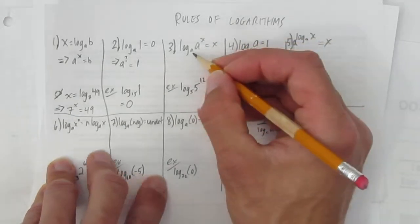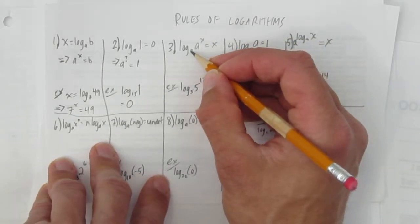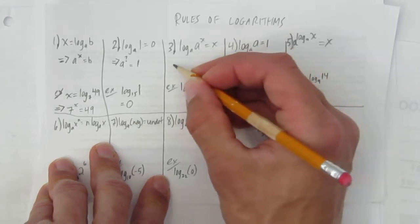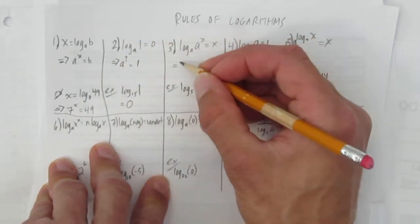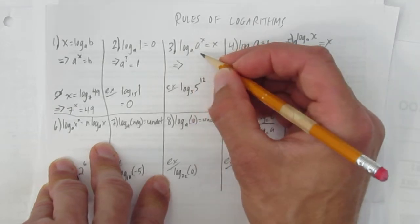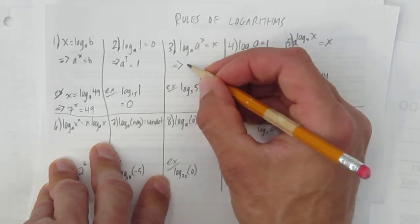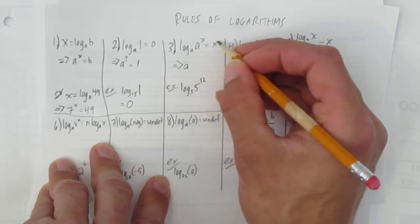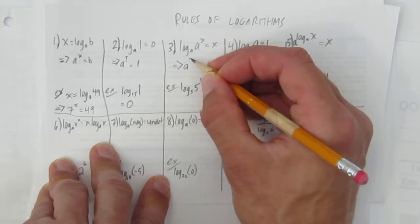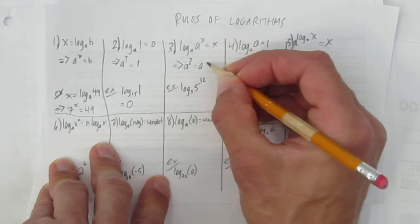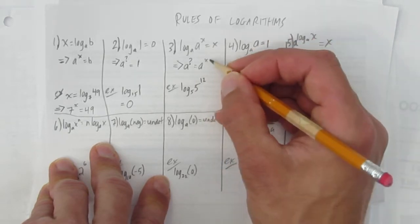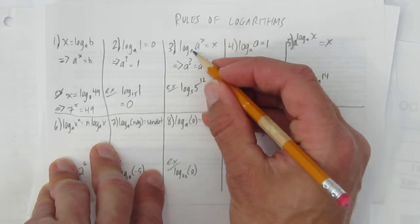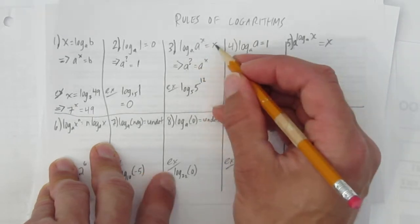Rule 3. Rule 3 says log base a of a to the power of x equals x. And again, you don't have to show this, but using rule 1, look how obvious this is. Convert this to a logarithm. The base is a, and then if you didn't know this was x, that's the answer for this rule, what's the exponent so that you get an answer of a to the x? In other words, what exponent should you put here? a to the power of what exponent gives a to the x? The answer has to be x.